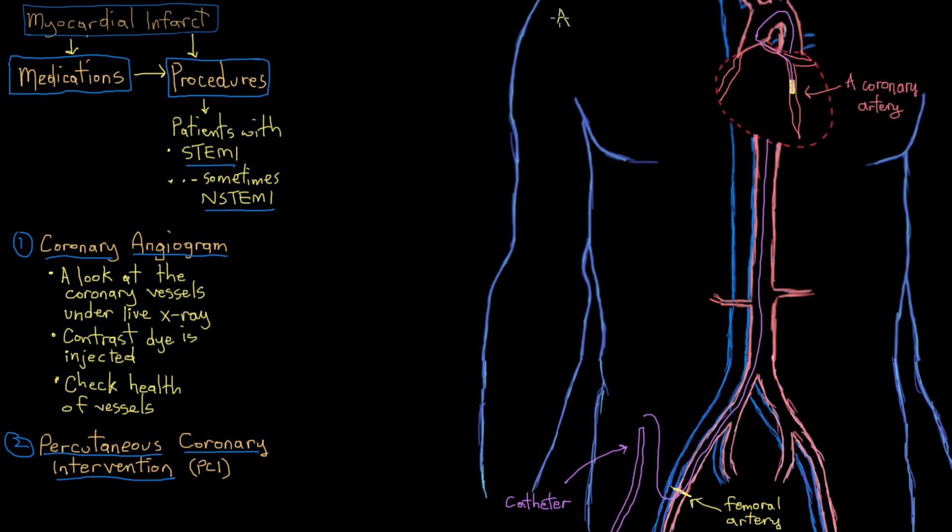Which is where they blow a balloon up that's on the end of the catheter. So there's a balloon on the end of the catheter, and when they blow it up, it sort of opens up the blockage, pushes all of that atherosclerotic plaque aside, and allows blood through again.